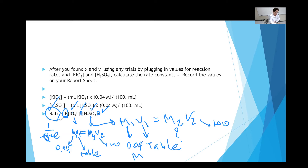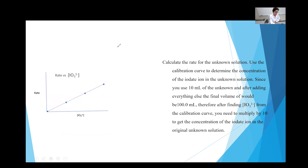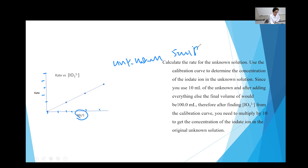Another purpose of this experiment is to construct a calibration curve. For the first five trials, calculate the concentration of the iodate solution and the rate for each trial. Plot a graph, find the best-fit line, and that becomes your calibration curve. Then take your unknown sample — we know it is iodate but we don't know the concentration.